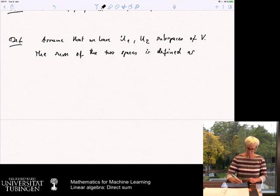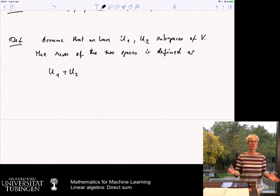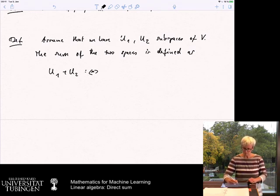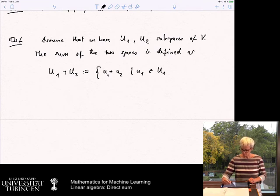The sum of the two spaces is defined as follows. We write this u1 plus u2, a normal plus sign between the two spaces. And this is defined as the following set: u1 plus u2 where u1 is in the first space and u2 is in the second space.